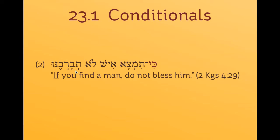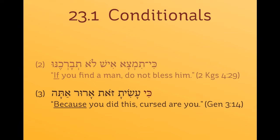Number three is a different use of ki where it introduces a protasis that is the cause of something — a causal use of ki. God is speaking to the serpent. And notice that the apodosis, the then part, is once again signaled because there is no vav before the second clause. So: because you, the serpent, have done this, then you are cursed.